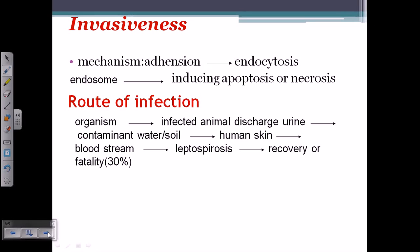Now let's talk about the pathogenesis in detail. For any bacterial pathogenesis there are sequential steps: adhesion of the bacteria with the host cell, then invasion, then finally the damage of the host cell and escaping host immunity. In this case, the invasiveness of this bacteria is due to adhesion.